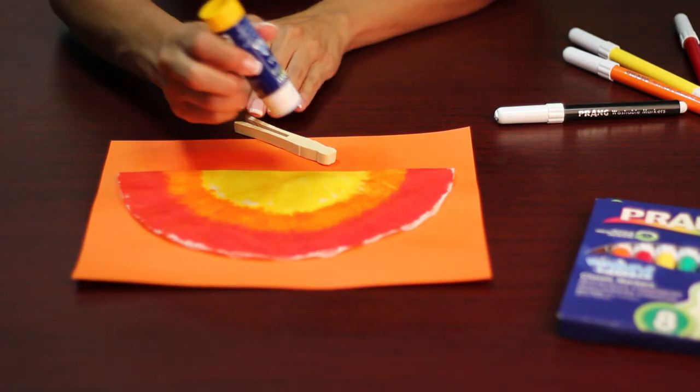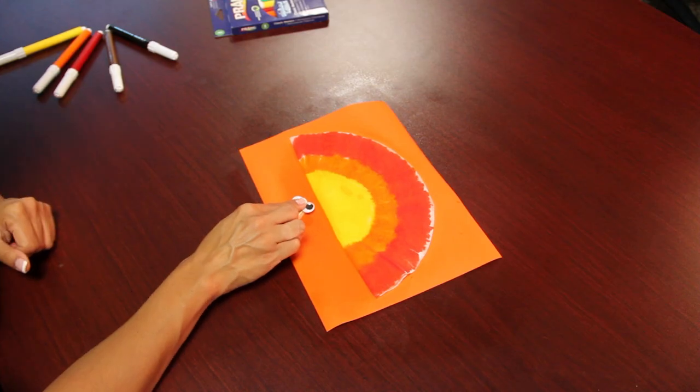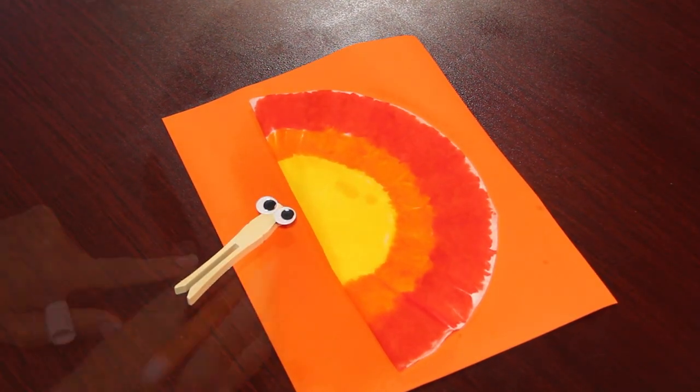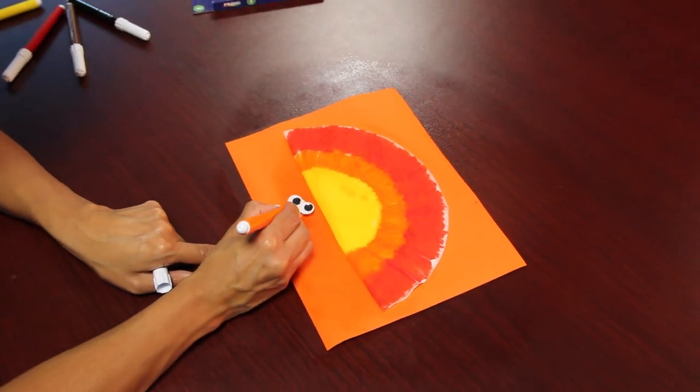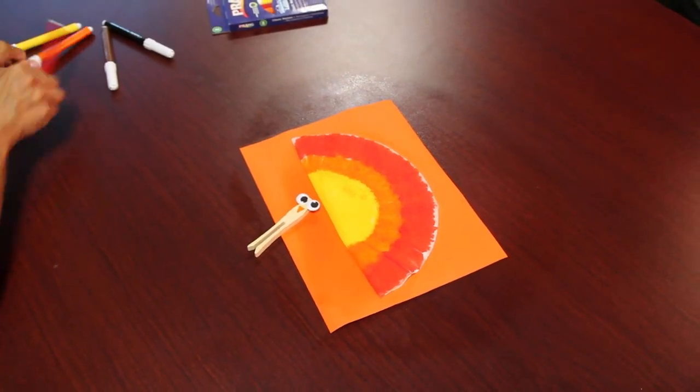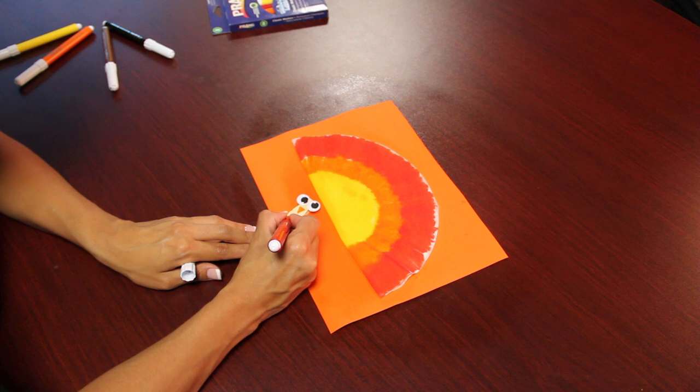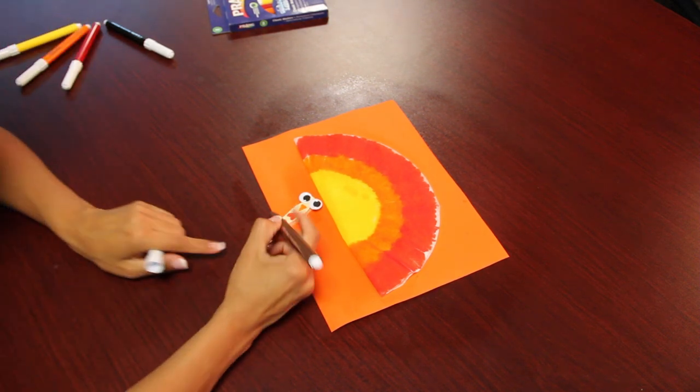Now it's time to use your googly eyes. Take your Prang glue stick and glue it to the pen. Now it's time to grab your clothespin. First draw your beak with a triangle shape and your waddle with an upside down heart. Make sure you use the tip of your Prang washable art marker for a fine, detailed line.